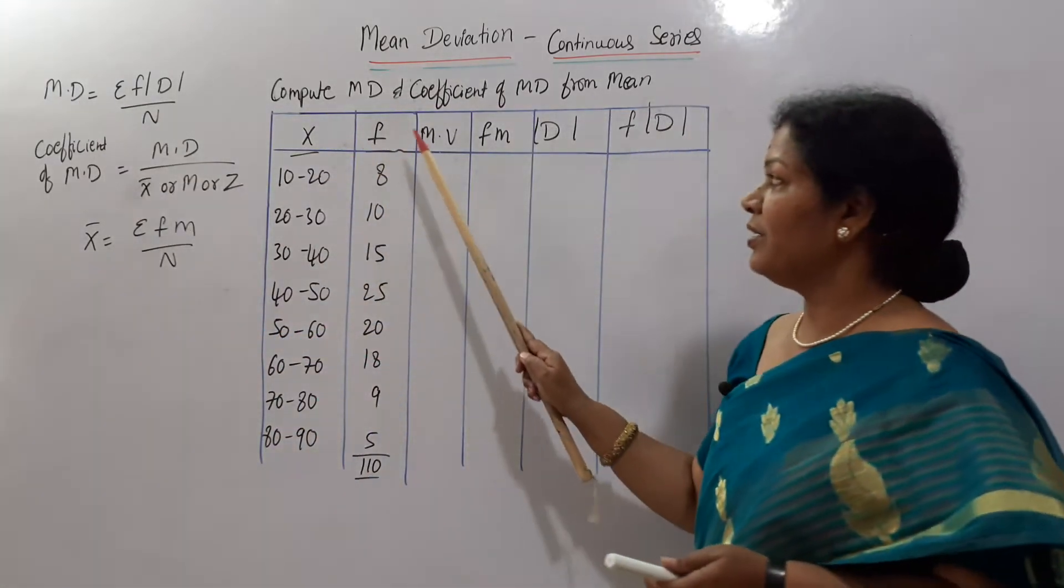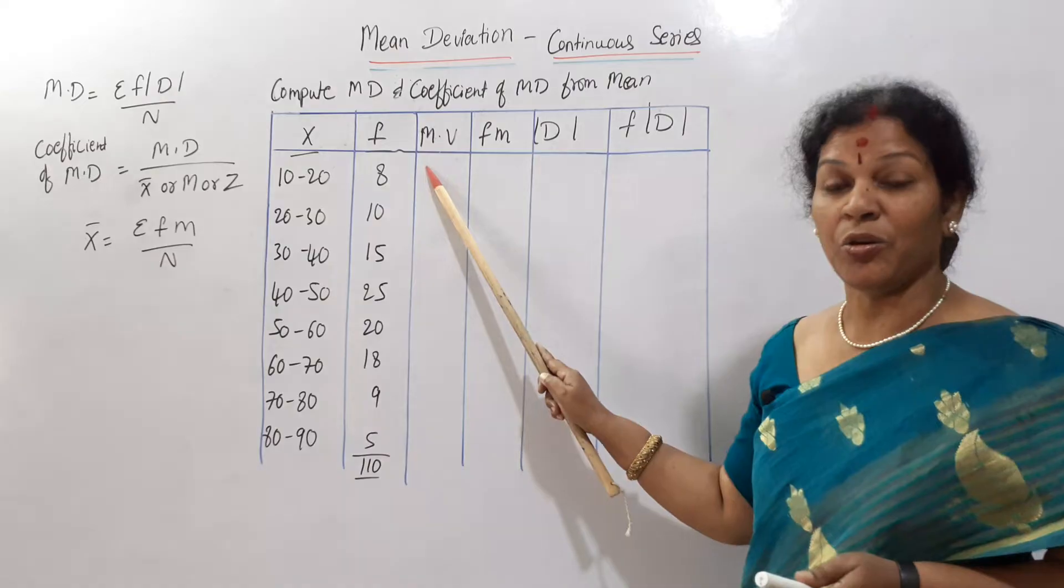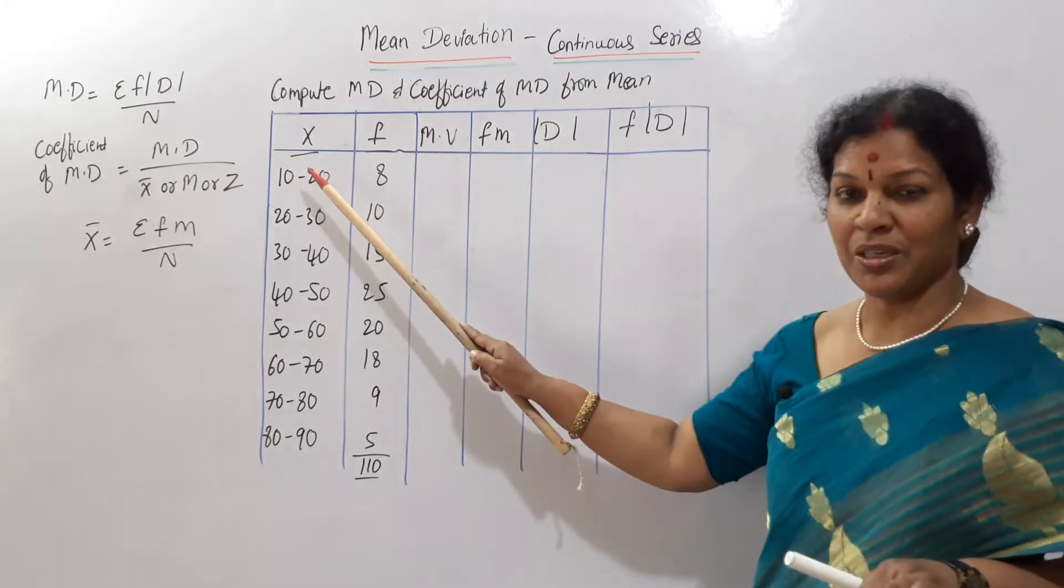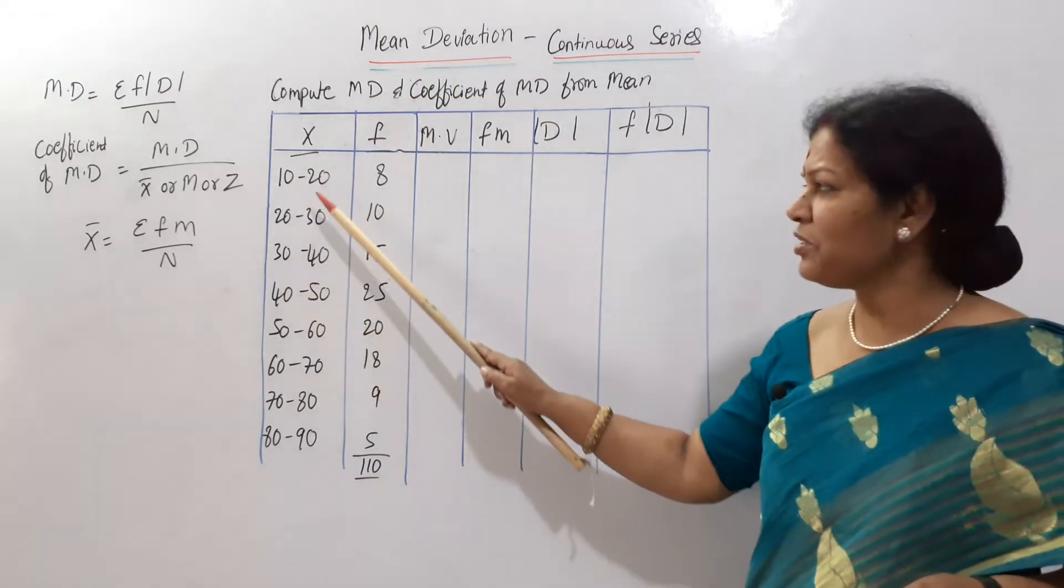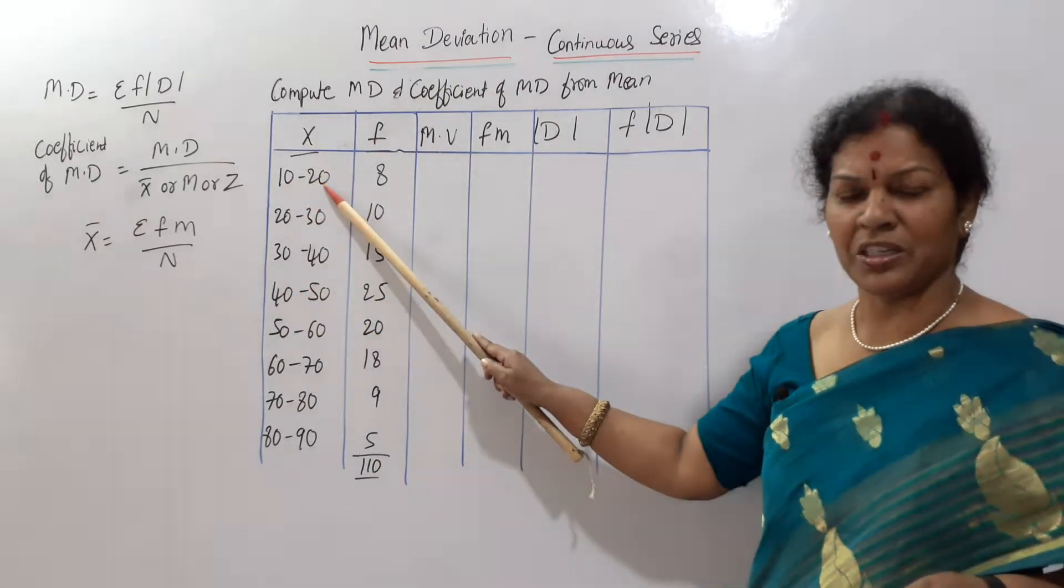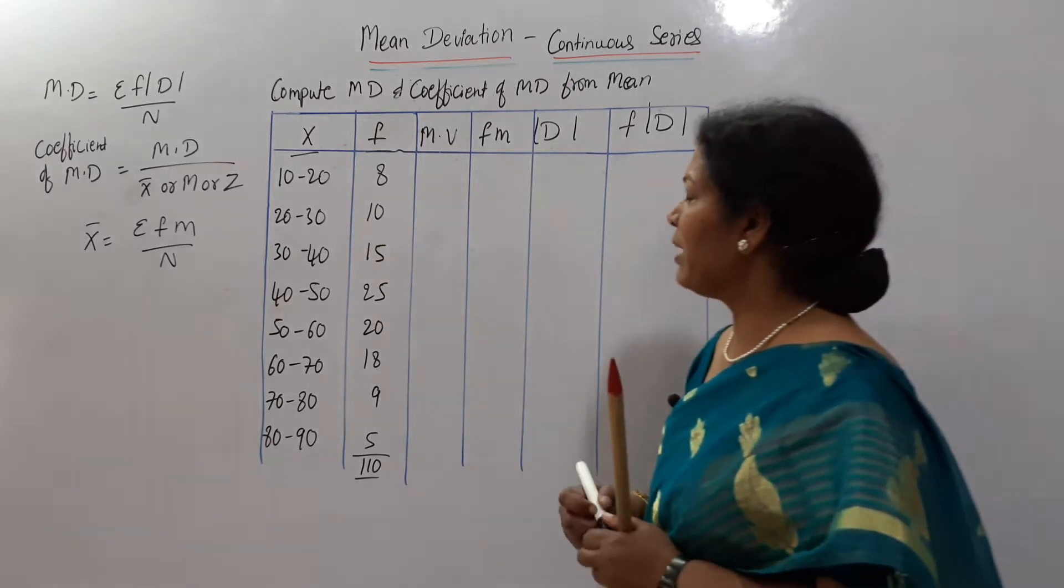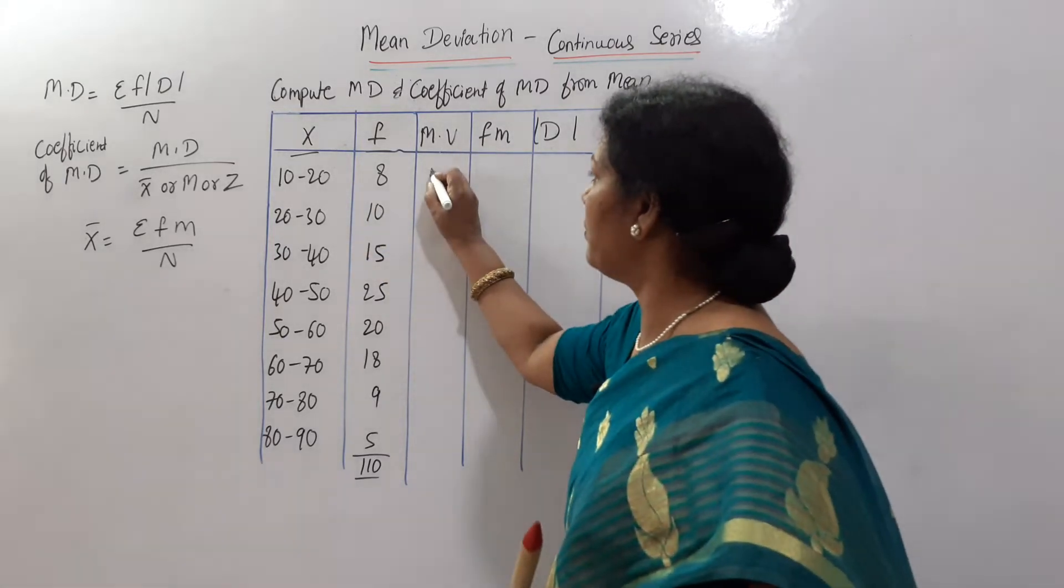This is the formula. First of all, we have to calculate mid value or mid point, which represents x, mid value, or you can say it as average. 10 plus 20, 30, divided by 2, 15. Like we have to calculate first mid value, 15.